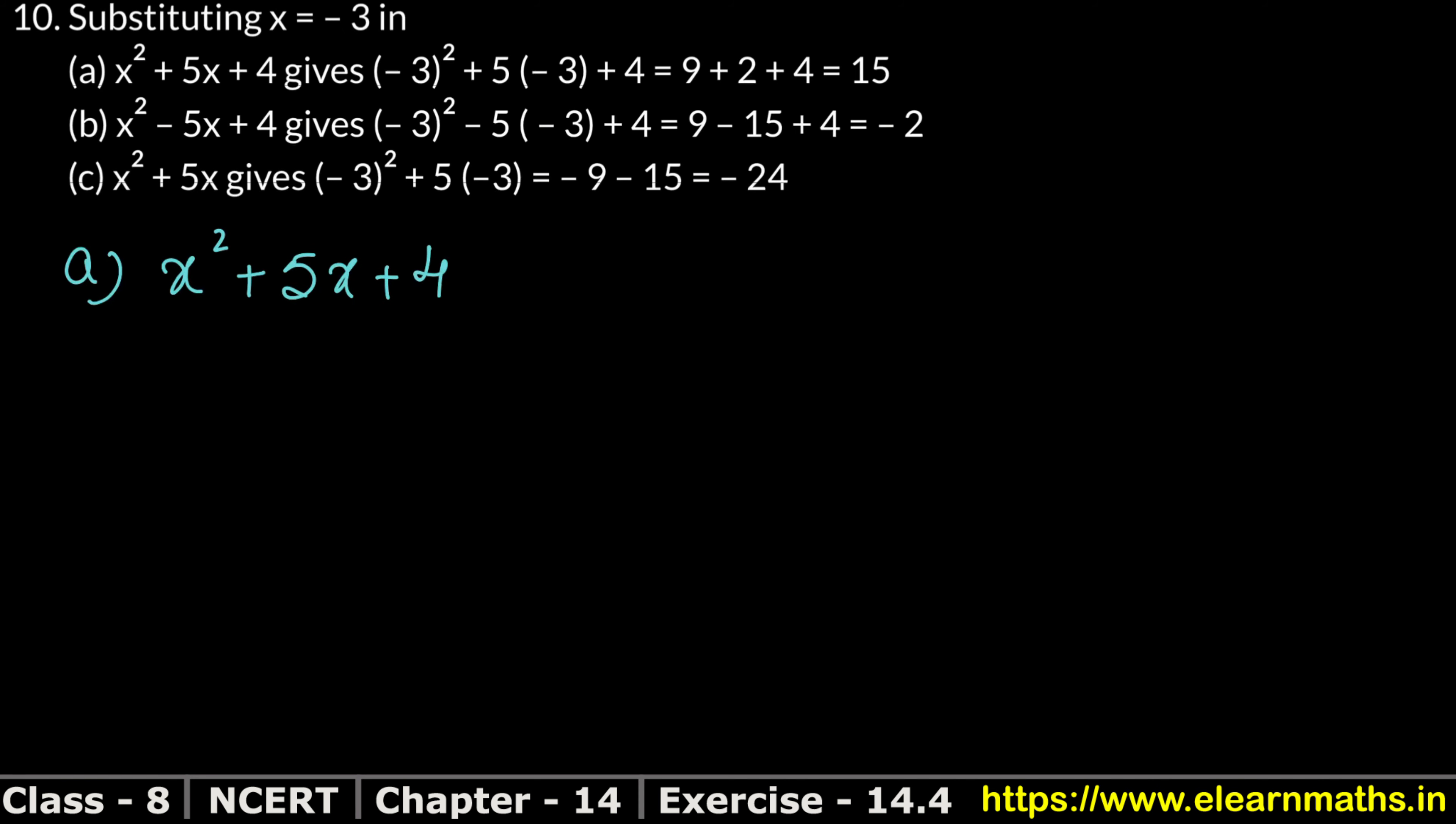If we write x value minus 3, putting x equals to minus 3. Where x is, we keep minus 3. Minus 3 whole square plus 5 into minus 3 plus 4.